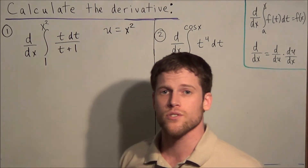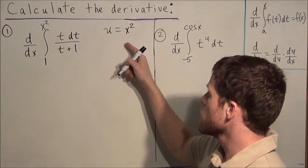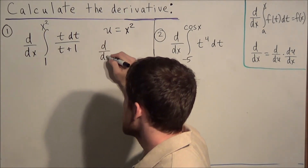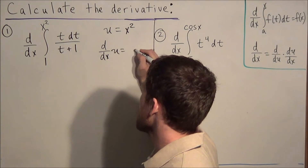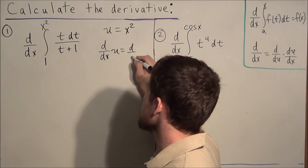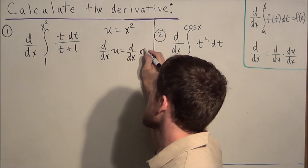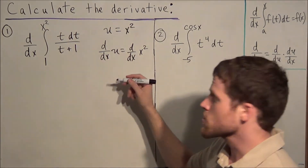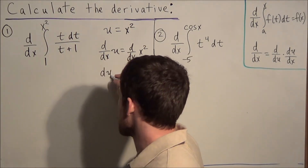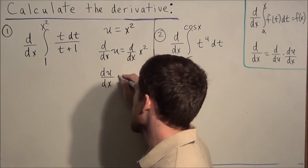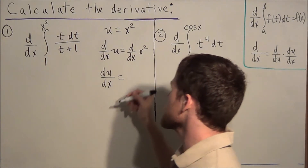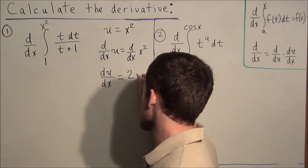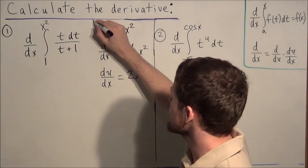When we make a u-substitution, we want to take the derivative of both sides. We're going to take d/dx of the left side and also d/dx of the right side. On the left side, this gives us du/dx, and on the right side, taking the derivative of x squared using the power rule gives us 2x.